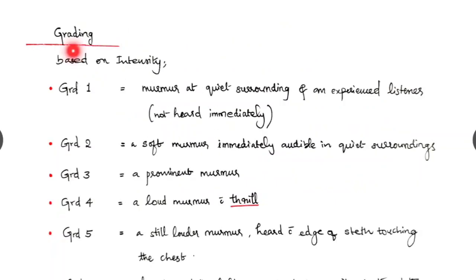Regarding the grading of the murmur, it is based on the intensity. Grade 1 murmur is the murmur heard by an experienced listener in a quiet surrounding with a stethoscope. It is not heard immediately. Grade 2 means a soft murmur which is immediately audible in quiet surroundings with a stethoscope. Grade 3 is a prominent murmur.